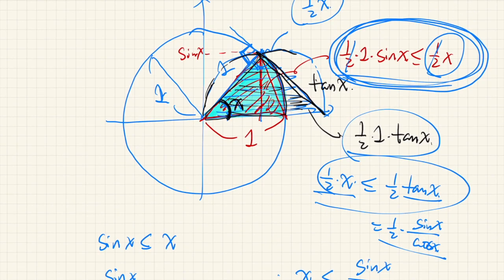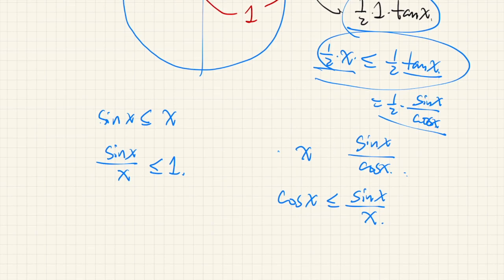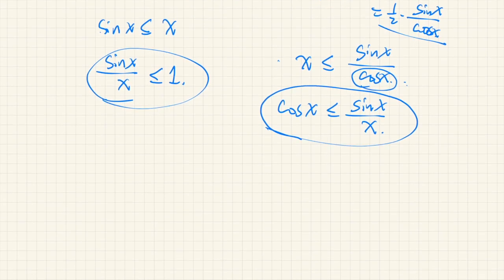Since we are taking the limit of x going to 0, we can assume that x is sufficiently small. So the signs of sin x and cosine x, we can assume they are all positive. That's why these inequalities don't change if we divide or multiply by these quantities. So we have cosine x is less than or equal to sin x over x, which is less than or equal to 1.